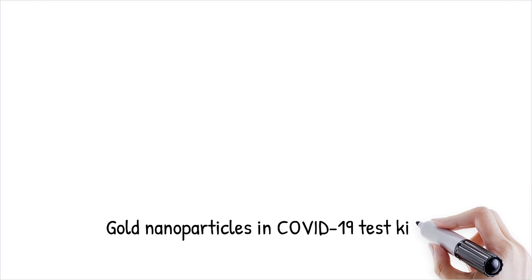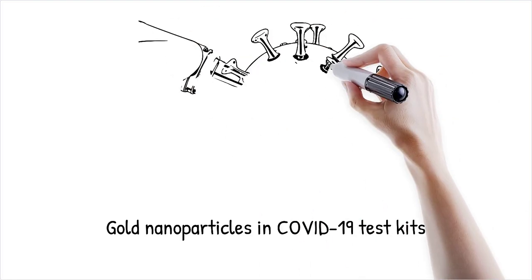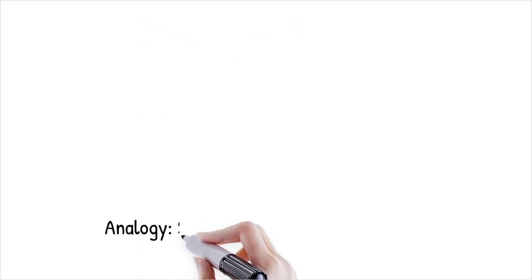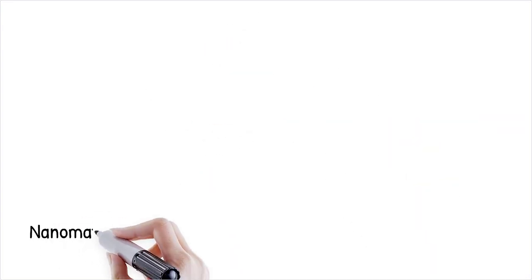Gold nanoparticles appear red or blue depending on their size and aggregation state, a principle used in rapid COVID-19 test kits. It's like tuning the color of soap bubbles by changing their thickness. Different sizes interact with light differently at the nanoscale.